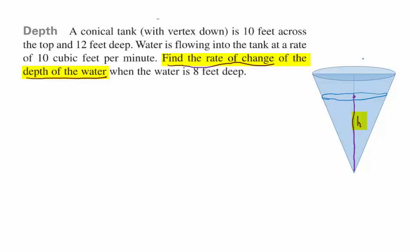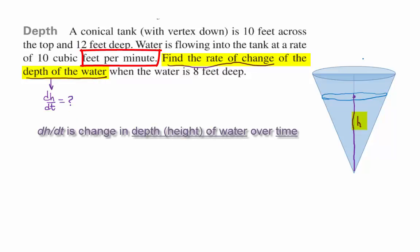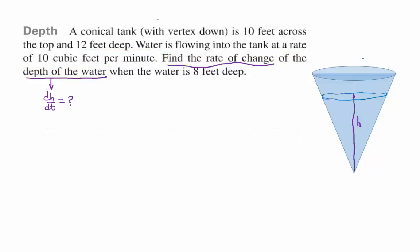Is time passing? Yeah, right. It's talking about water flowing into the tank over time. So what we're looking for is DH/DT, the change in the depth of the water over time. They tell us that the tank itself is 10 feet across and 12 feet deep. As the height H increases, it's going to range from 0 all the way up to the maximum of 12.